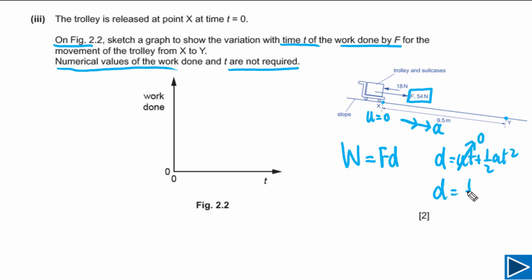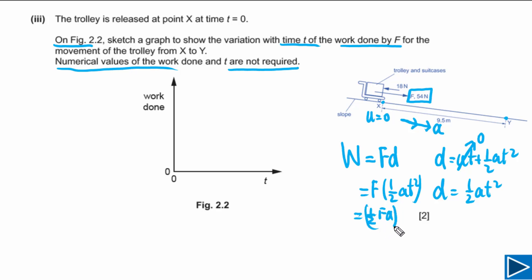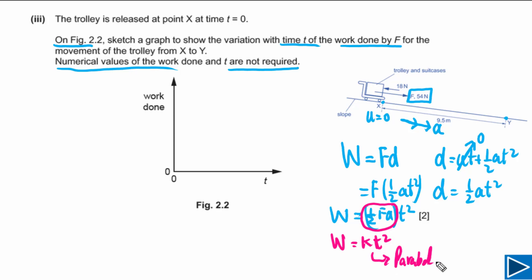Since u = 0, displacement s = ½at². Work done W = F × s = F × ½at² = (½Fa)t². Since F and a are constants, this simplifies to W = kt², which is the equation of a parabola. So the graph shape is a curve with increasing gradient.